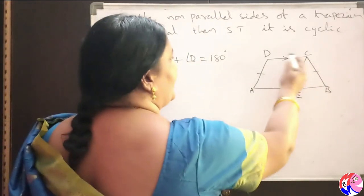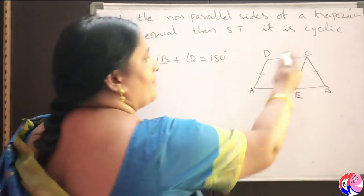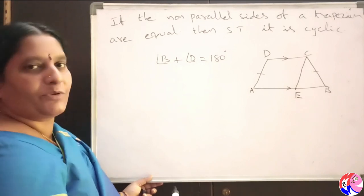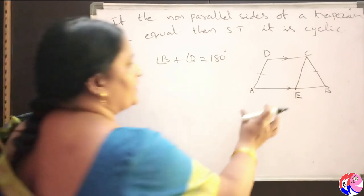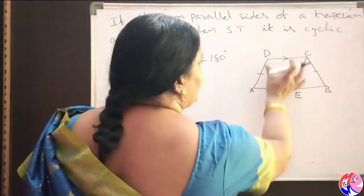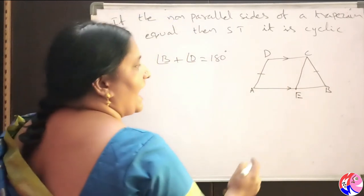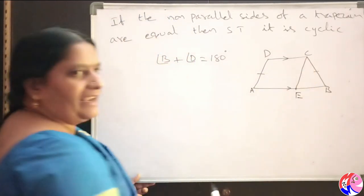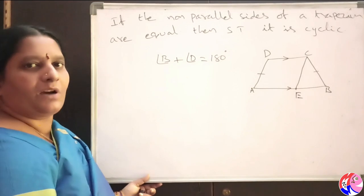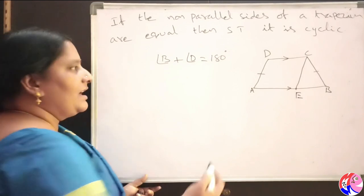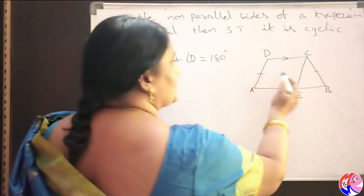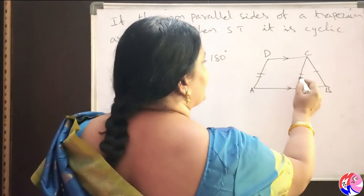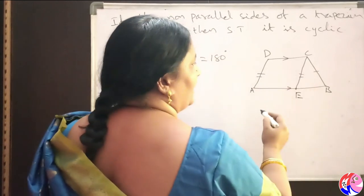Because AECD is a parallelogram, we know that in a parallelogram opposite sides are equal. So AE is equal to CD. And similarly, AD and EC are also opposite sides of the parallelogram, and opposite sides of a parallelogram are equal, so AD equals EC.